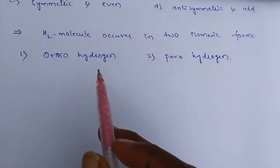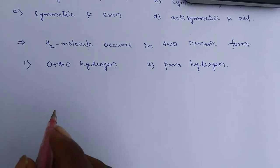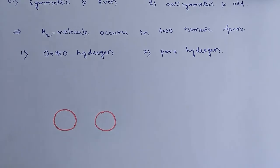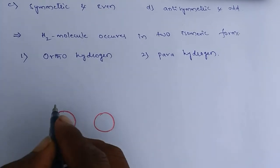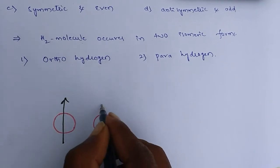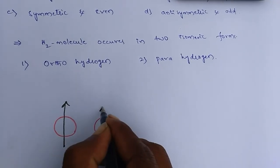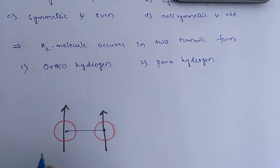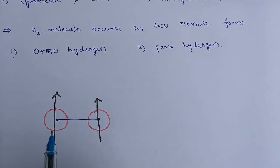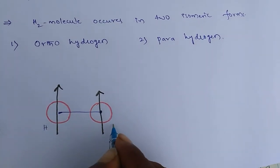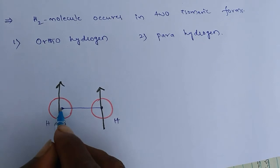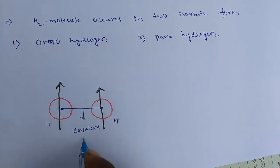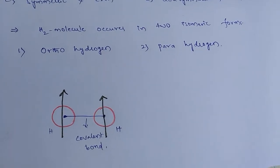I am going to show ortho-hydrogen and para-hydrogen in diagrammatic way. So this is one hydrogen and this is another hydrogen. These two are connected by covalent bond.